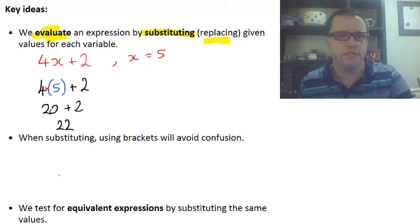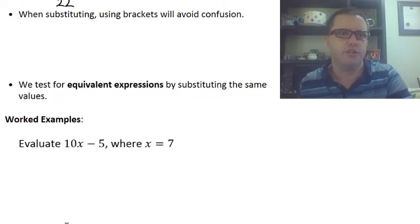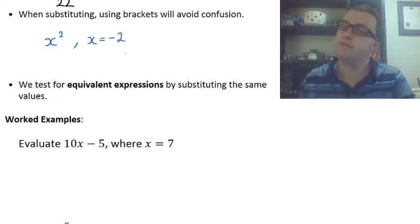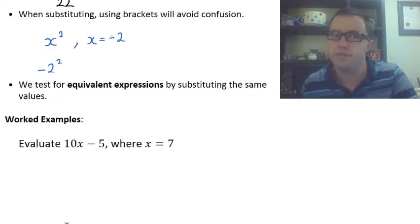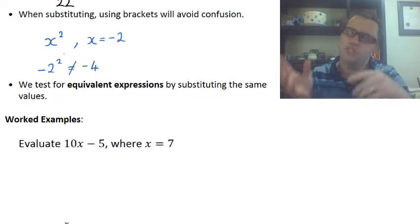When you are substituting numbers in, using brackets will avoid confusion. I'm about to show you why. If we had x squared, remember that's just the same as x times x. But we're going to say now that x is equal to negative 2. That brings out some problems because if you don't use brackets and you just go, x squared. So that means negative 2 squared. So I've just replaced the x with the negative 2. This becomes a problem because if you just type this in your calculator, it's going to give you that being equal to negative 4. But it's not.